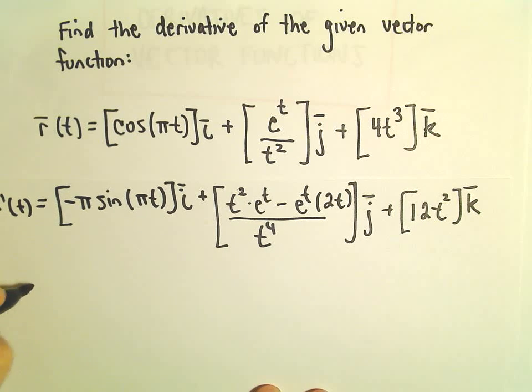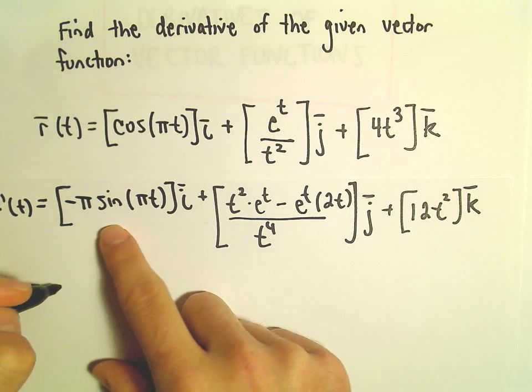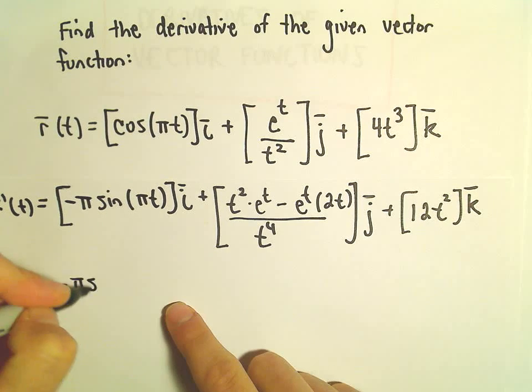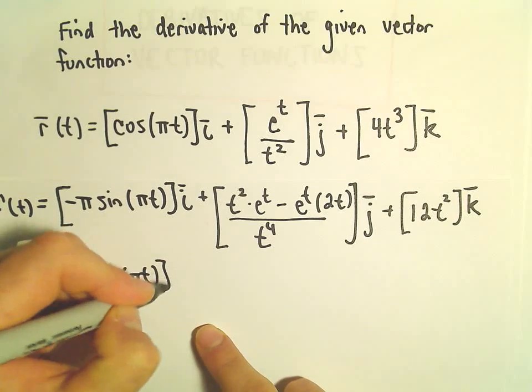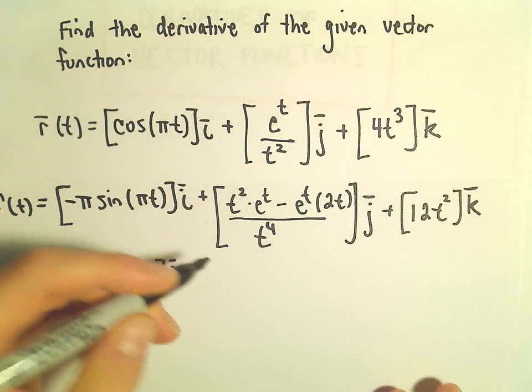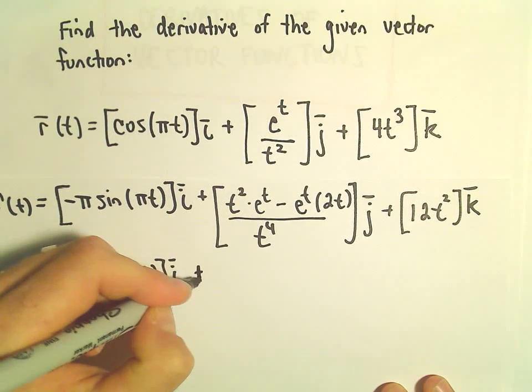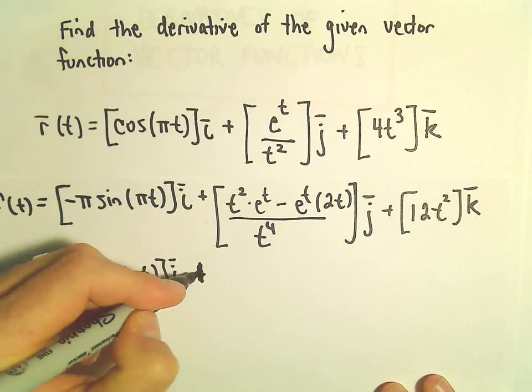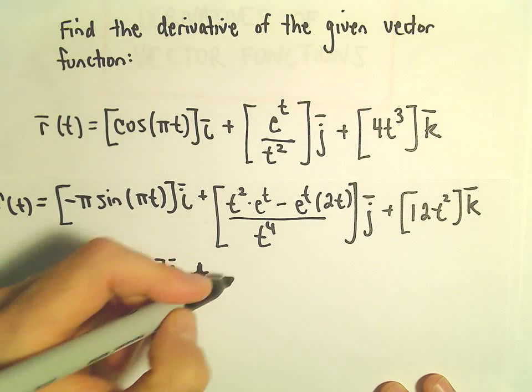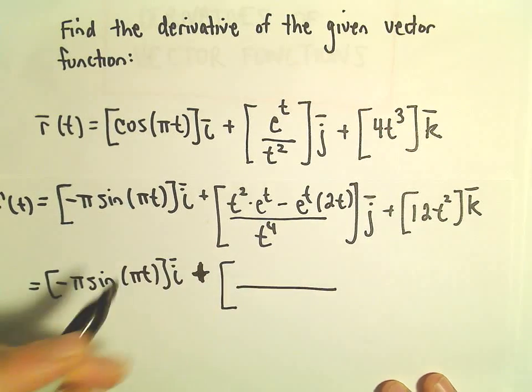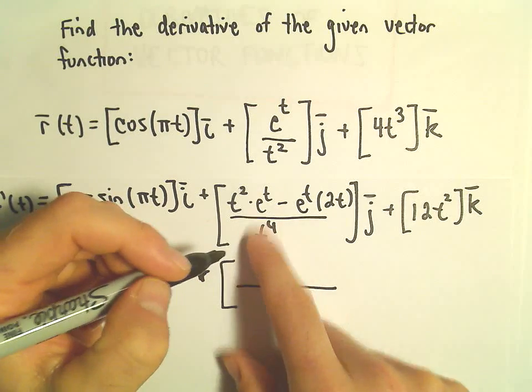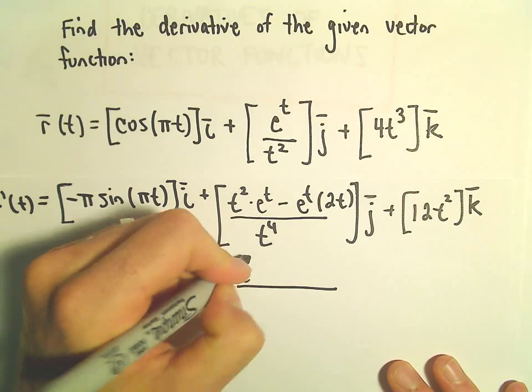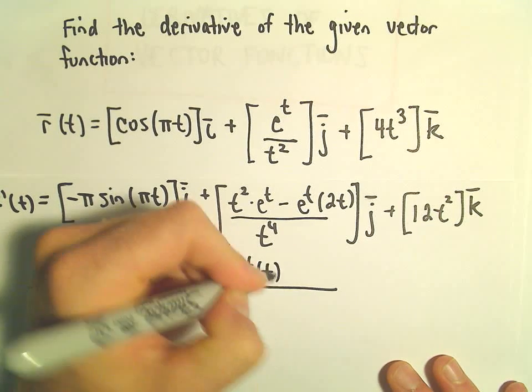And that's now our derivative. So I think I'm going to do maybe just a little bit of simplification. So we have negative pi sine of pi t times i. I guess we could factor a t out of the numerator, which would cancel out with a t in the denominator. We could even factor an e to the t out as well. So we could factor out e to the t and a t.